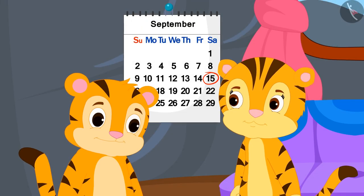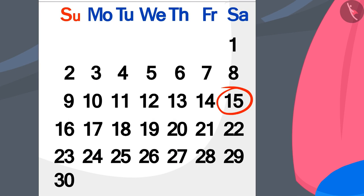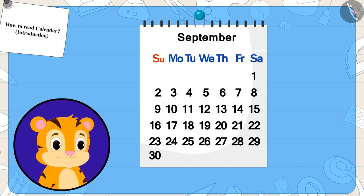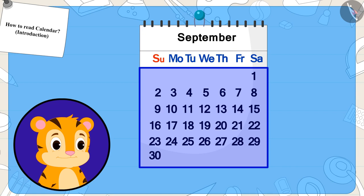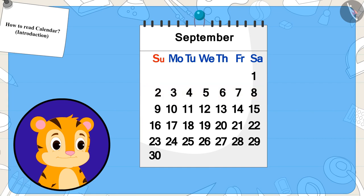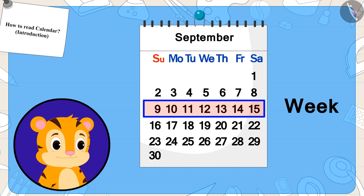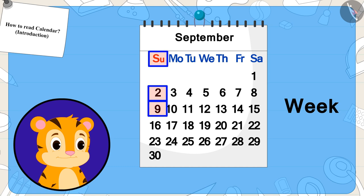Sher Khan's mother showed him the date of the magic show on the calendar. Now, Sher Khan started thinking about how the days were written in the month. But he could not understand why only the names of the days were written above. Do you know the reason? Because one week is made by adding 7 days. And as soon as one week ends, another week starts. So once again, the second week starts from the same day, and that is why the names of the days are written only above.